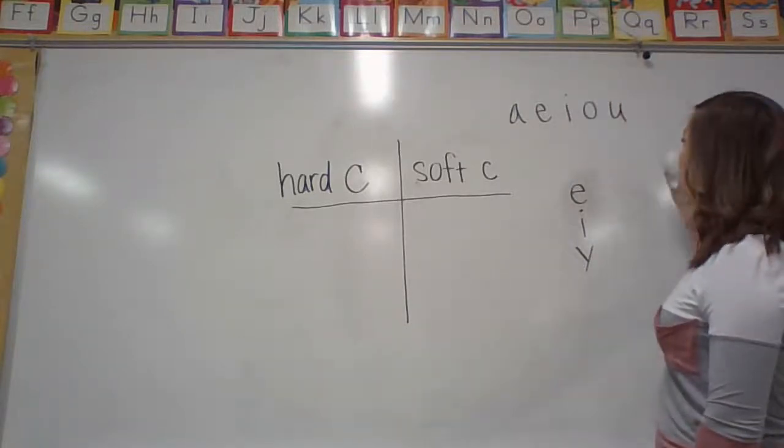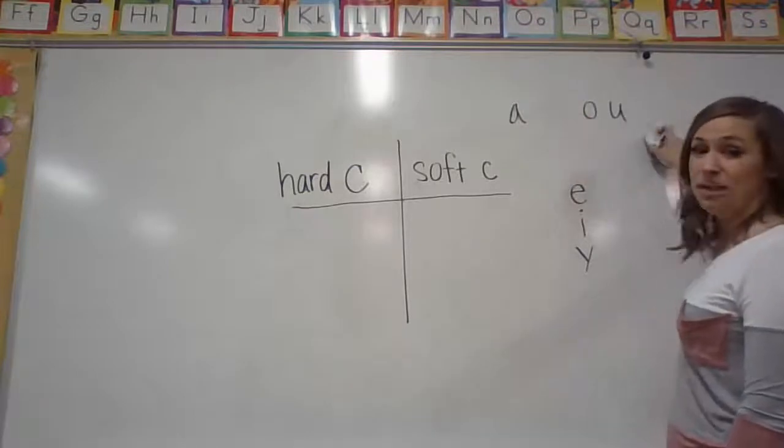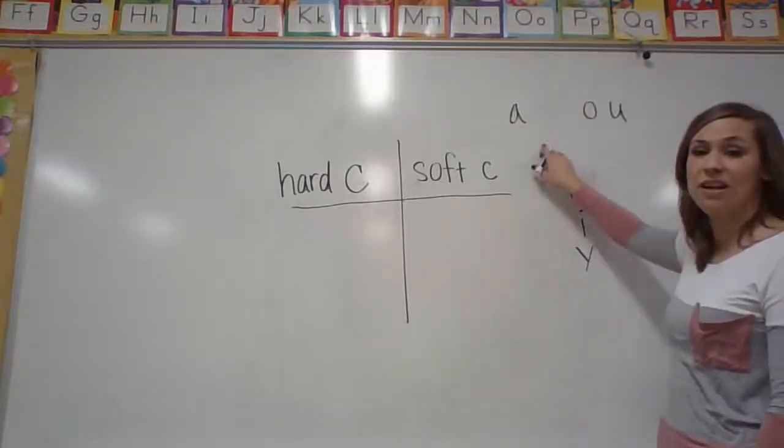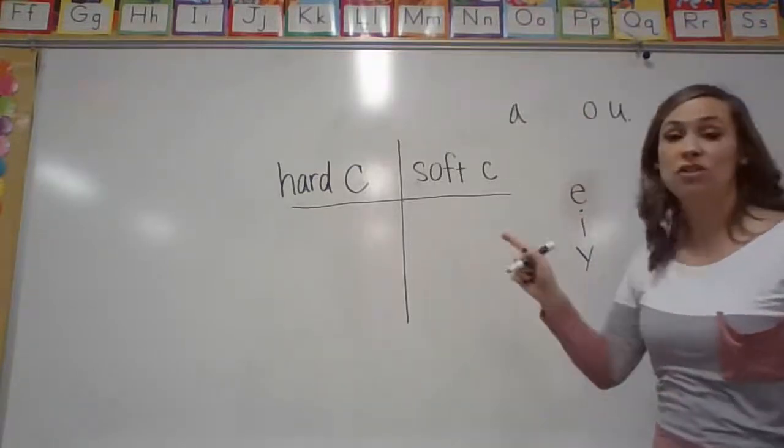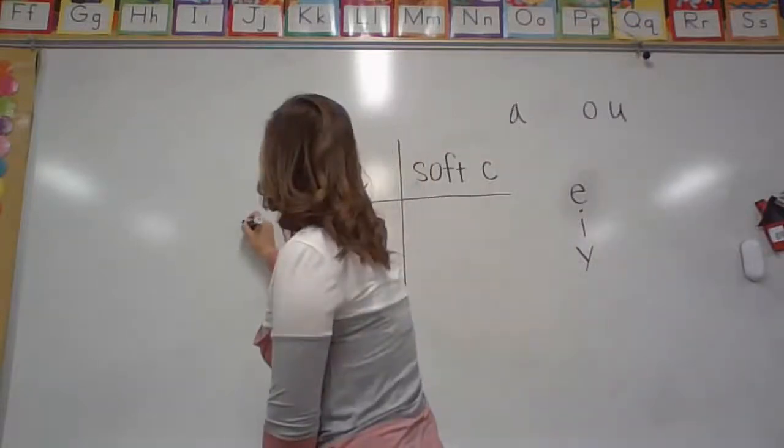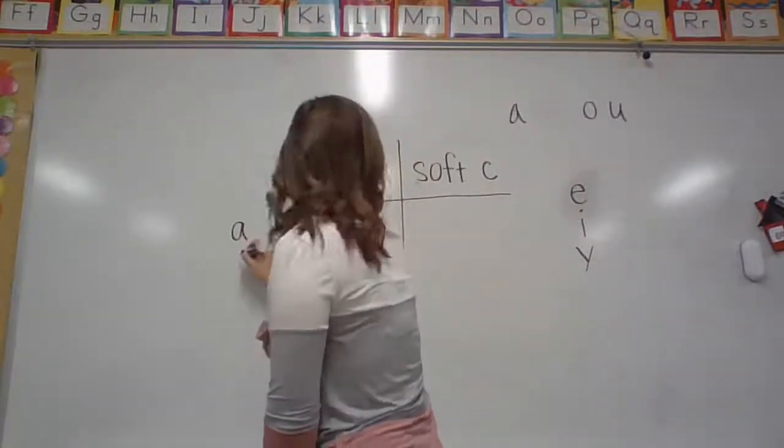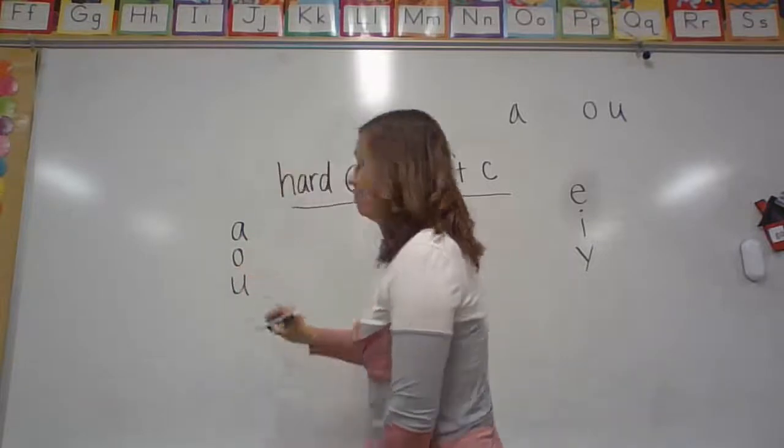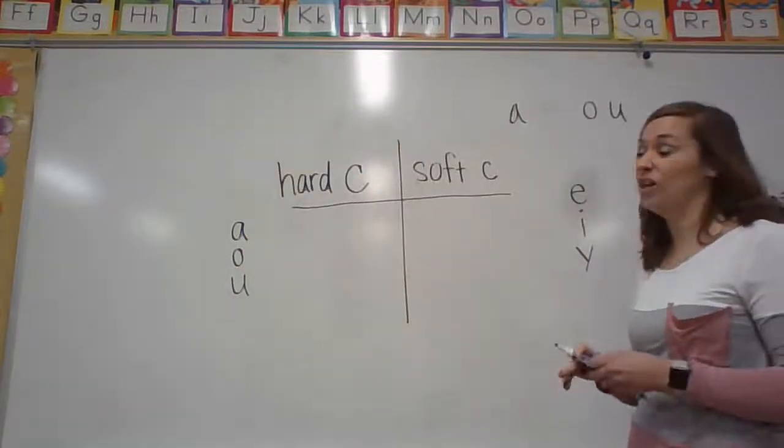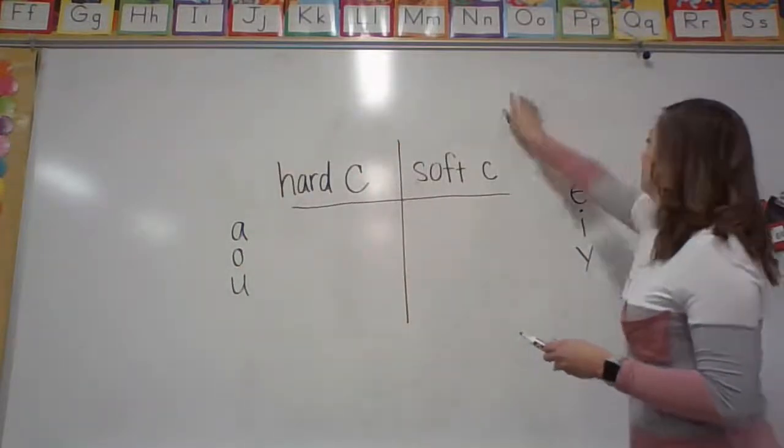So we already have E, I, and sometimes Y. So the only vowels left are A, O, and U. So if you have a C followed by an A, O, or U, then that's going to be a hard C. Okay?